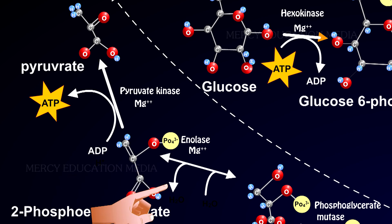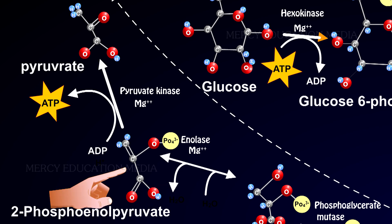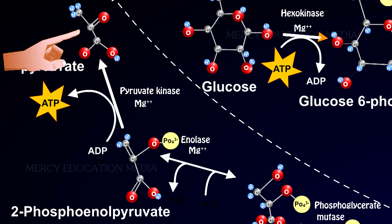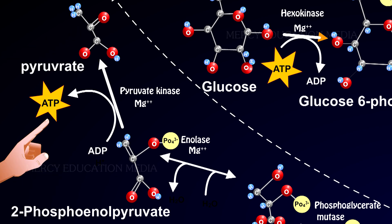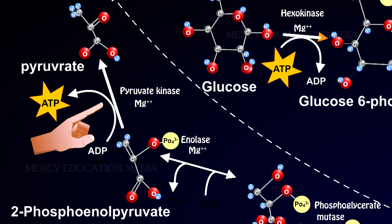The removal of a water molecule from the substrate is called enolation. A molecule of 2-phosphoenolpyruvic acid is dephosphorylated to pyruvic acid, and ADP is phosphorylated to ATP. This reaction is catalyzed by pyruvate kinase.